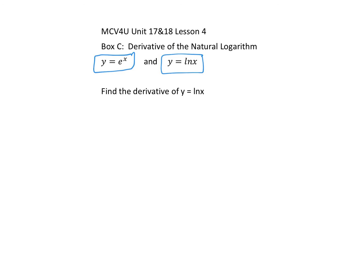To find this derivative, I'm going to take base e of both sides. Instead of writing y equals ln(x), we write e to the y equals e to the ln(x). Remember that e to the ln(x) equals x, because the base e cancels with ln. So we write e to the y equals x, and we want to differentiate both sides.